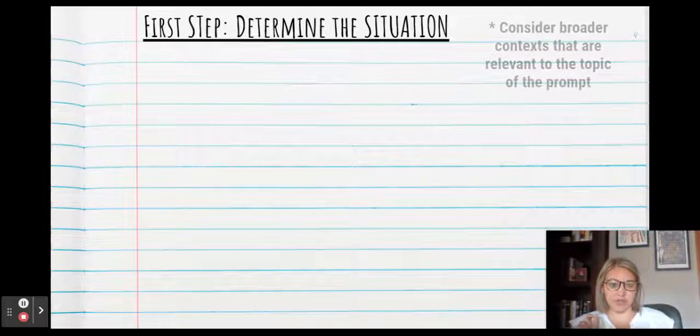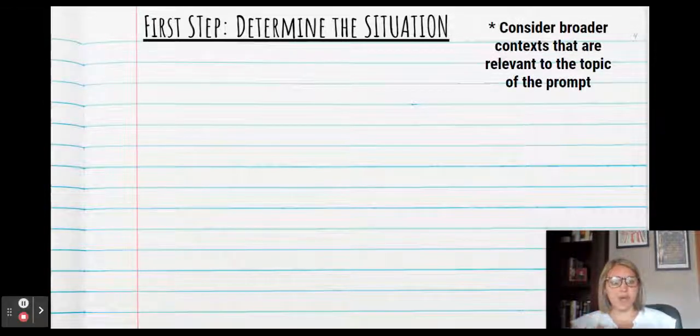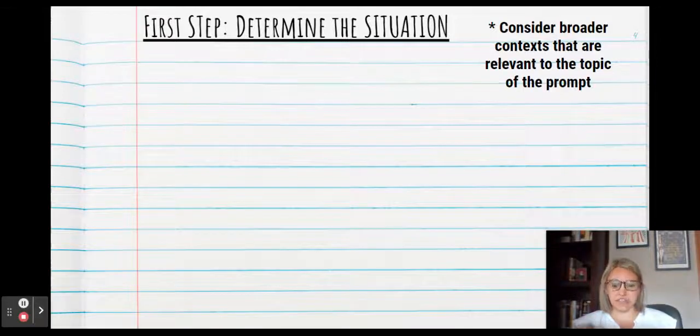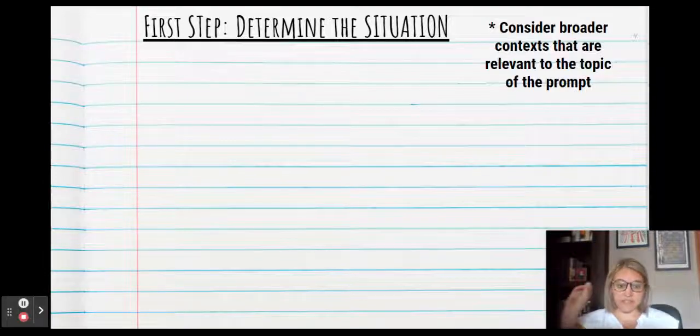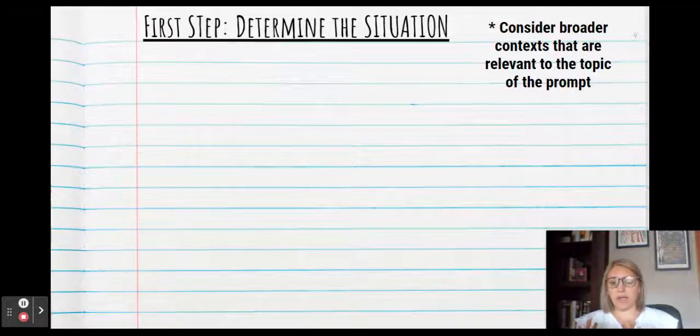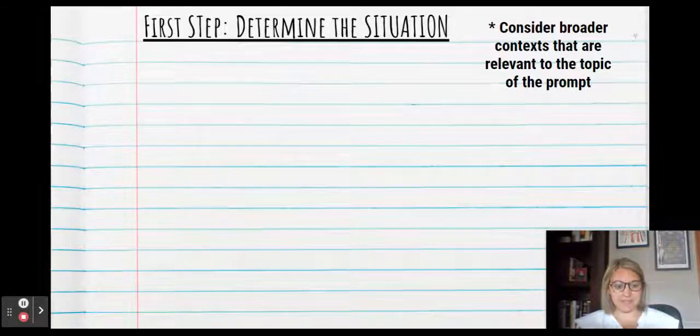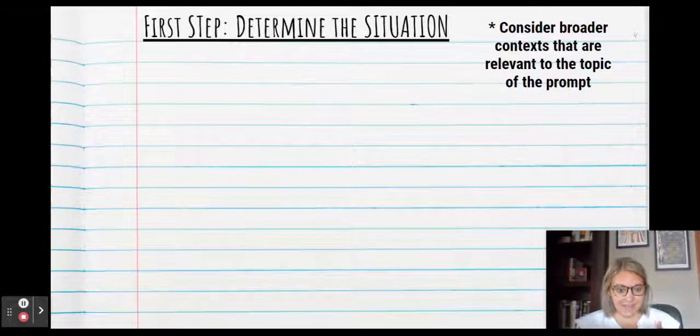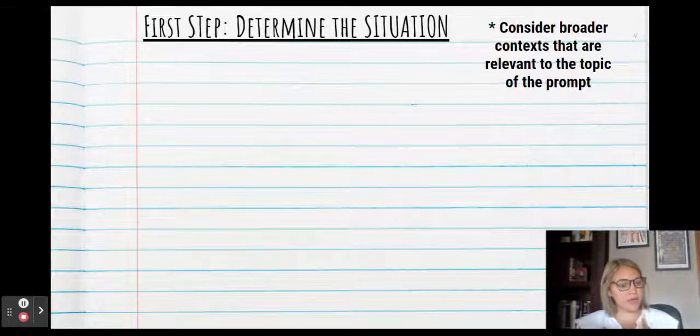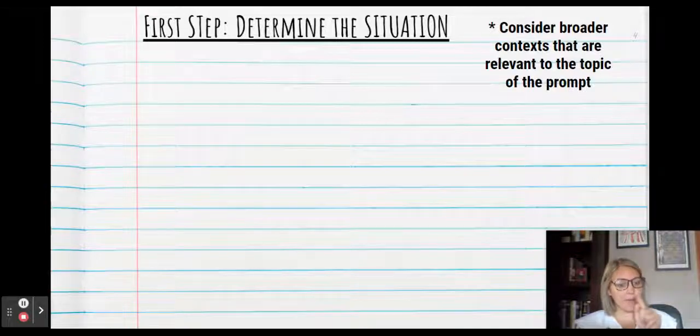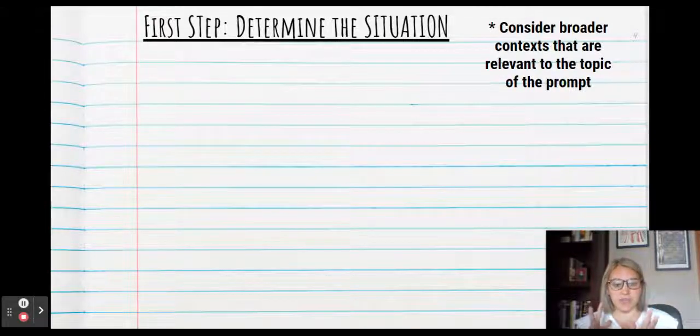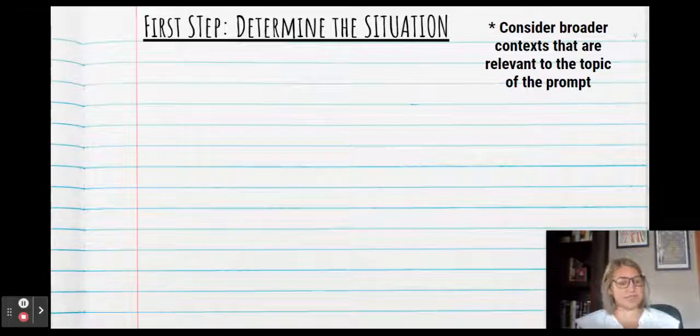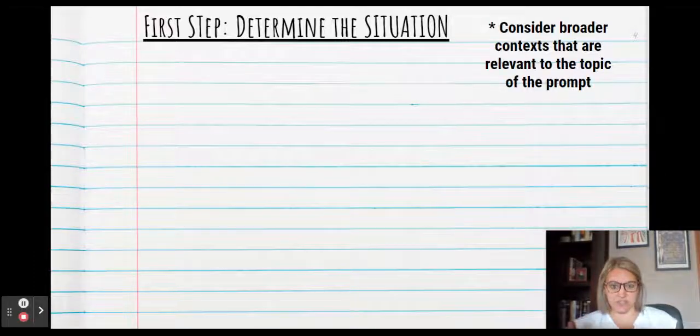So first we have to determine the situation. We have to consider broader contexts that are relevant to the topic of the prompt. When I teach students to work on contextualization, I always require them to work on their thesis first. So you get your prompt, you brainstorm what you're going to write about in your paper, you create your basic outline, and then you write your thesis, then do context. So if you don't know how to write a thesis, I encourage you to check out my earlier video on how to write a thesis. But I'm assuming that by this point, you know what your argument is, you've categorized it, you know your body paragraphs, you know your thesis. So now you're going back to contextualization.